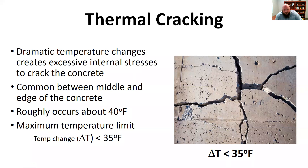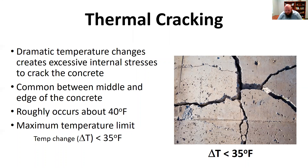Because of that, we can get some cracking. One of the types of cracking we can get is thermal cracking. This is largely about the differential change — so maybe between the middle of the concrete and the edge where the formwork is. If it gets above 35 to 40 degrees Fahrenheit difference, you may start seeing some thermal cracking.